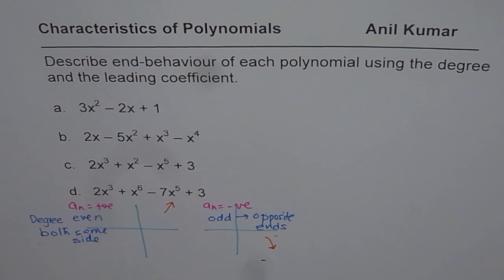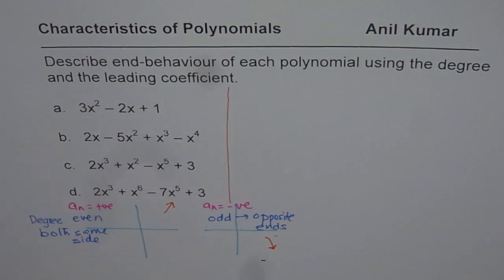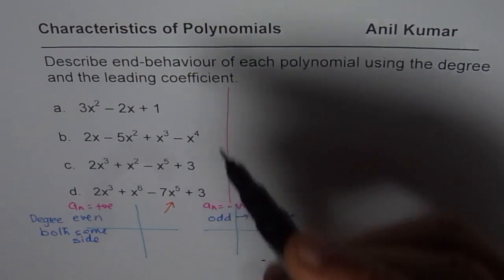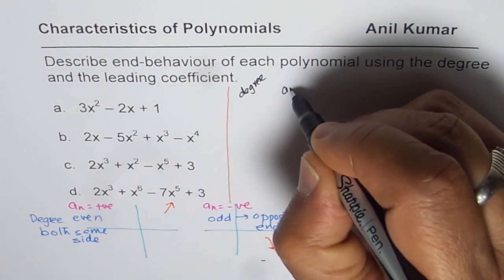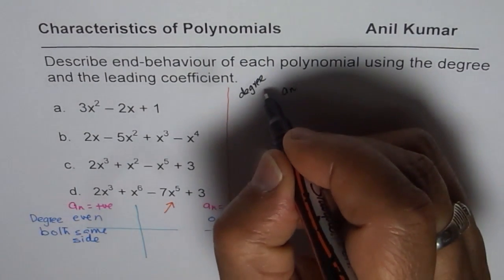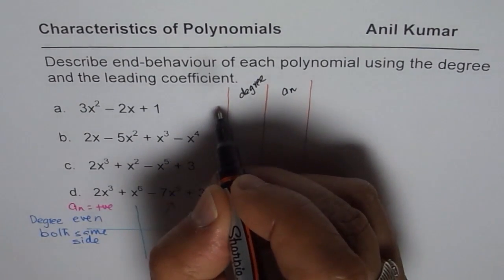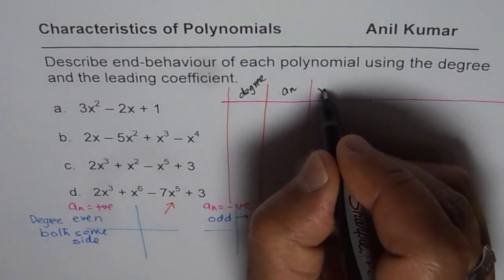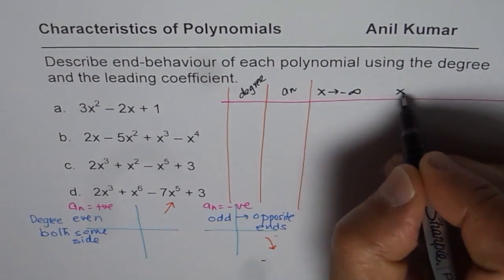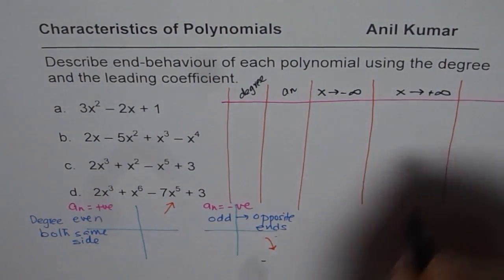These things will help us answer this question. Let us begin by writing the leading coefficients and the degree of each polynomial. We will make columns: degree, leading coefficient An (whether positive or negative), what happens when x approaches negative infinity, and what happens when x approaches positive infinity. That is what we mean by end behavior.